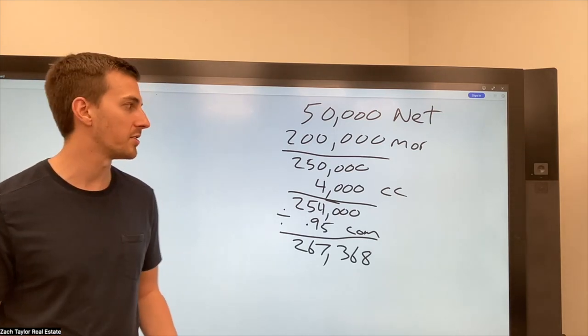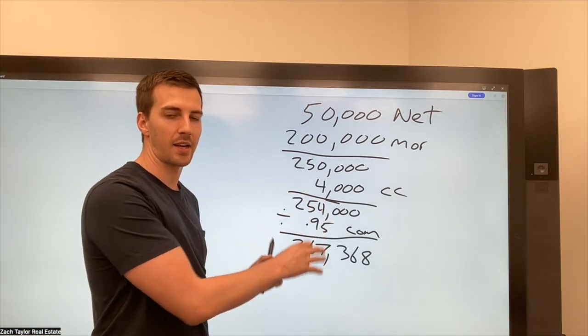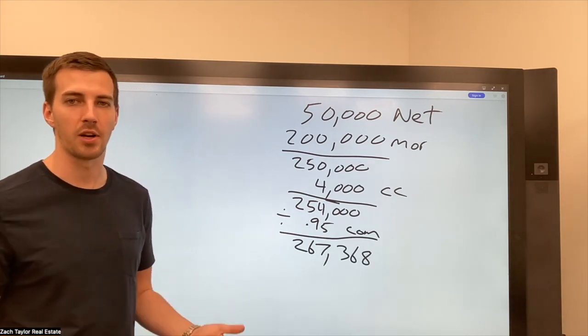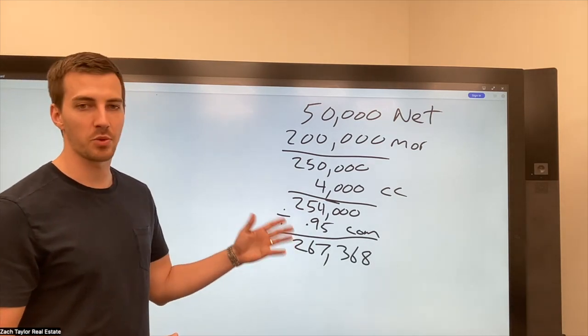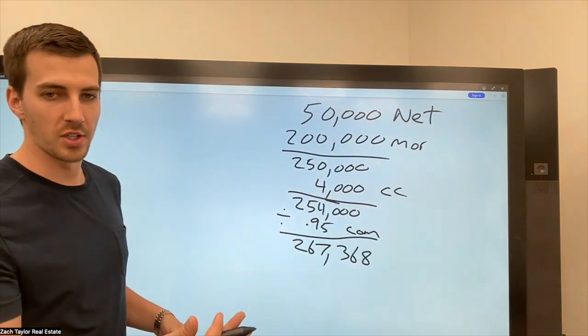That makes everybody happy. That makes the seller happy. There's no surprises versus me being really aggressive with these numbers, really exact, something random pops up. And then it's below what I've estimated. And now they're unhappy. So a better way to create raving fans with your sellers is overestimate and then over deliver as well.